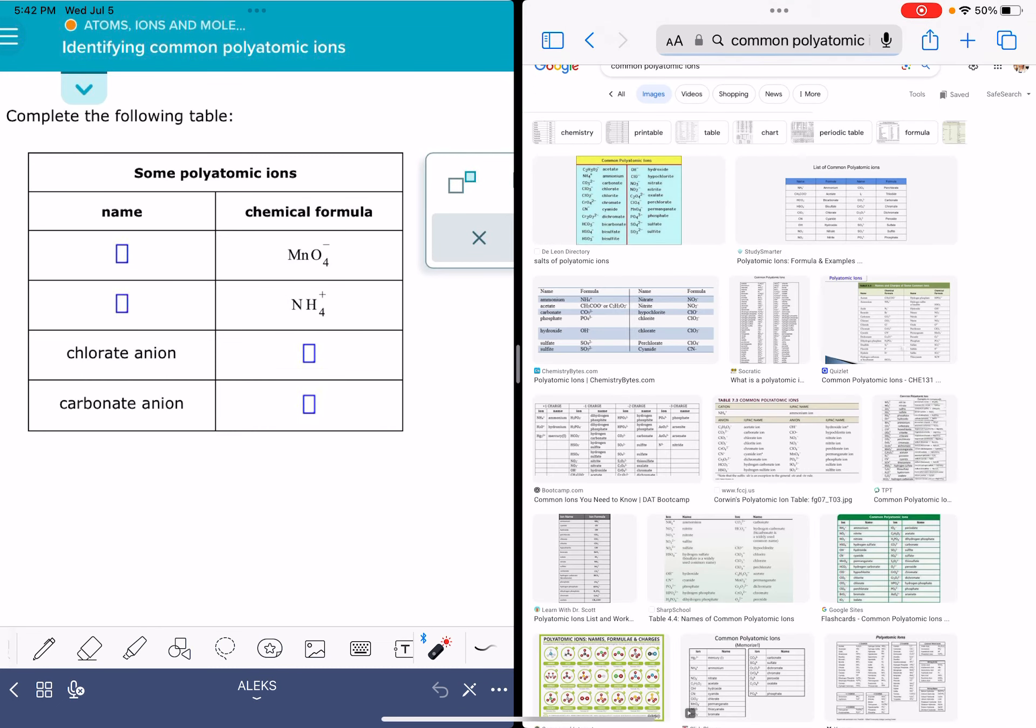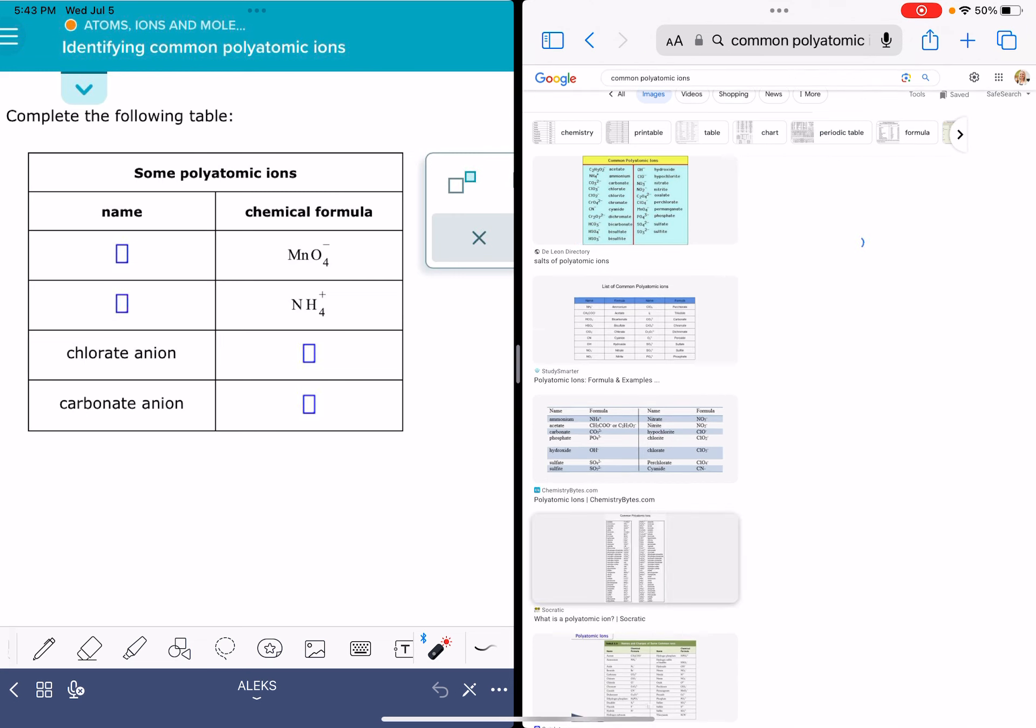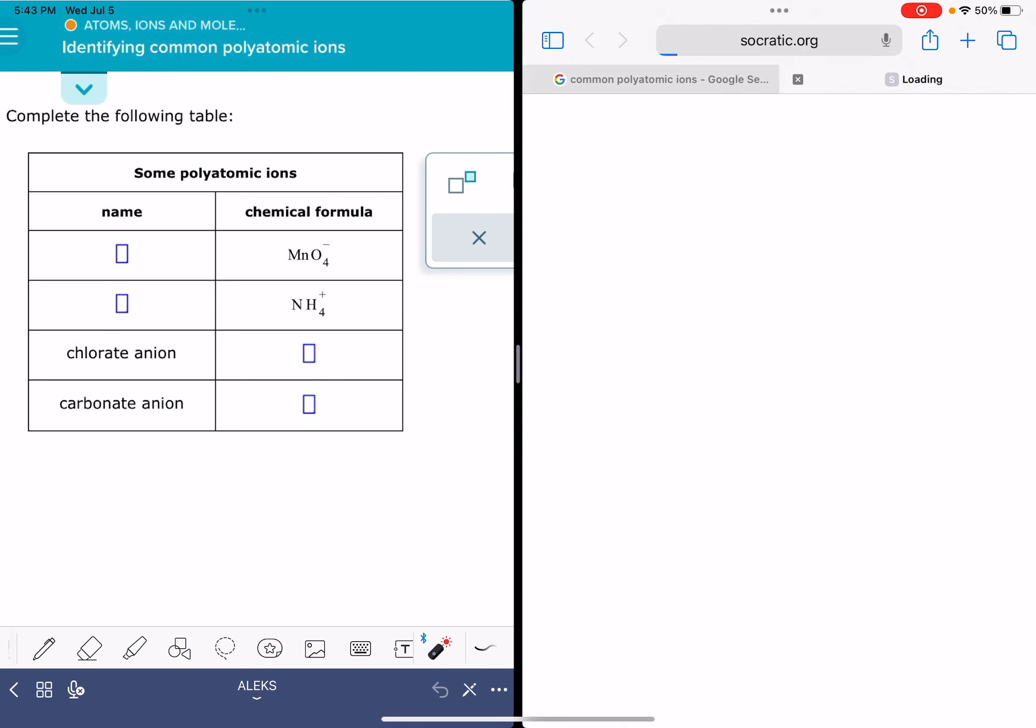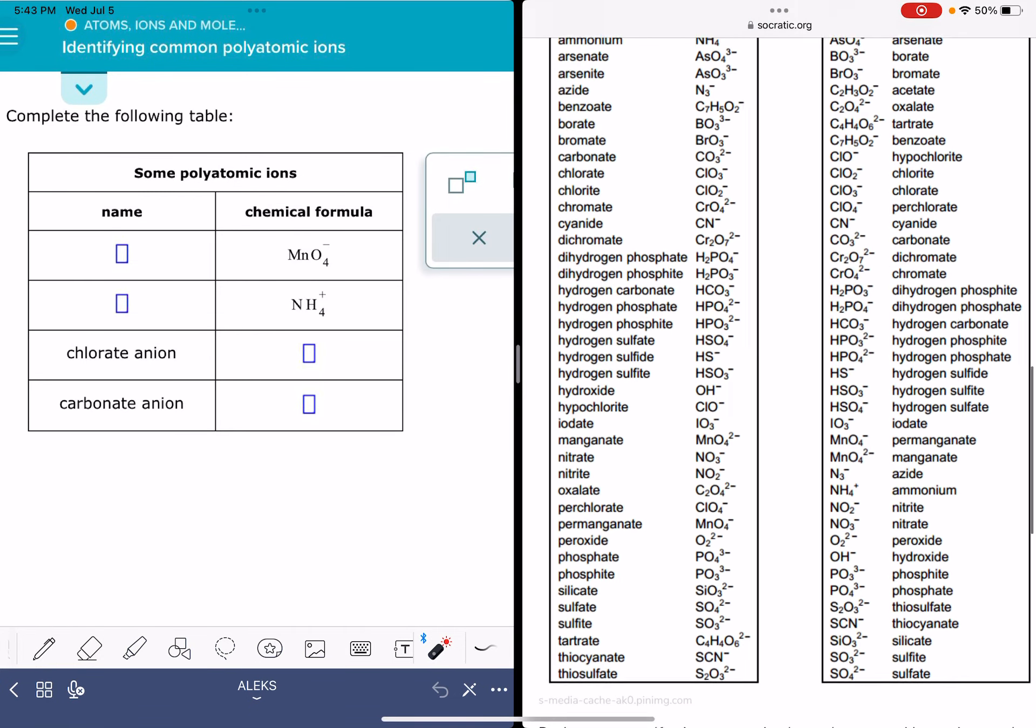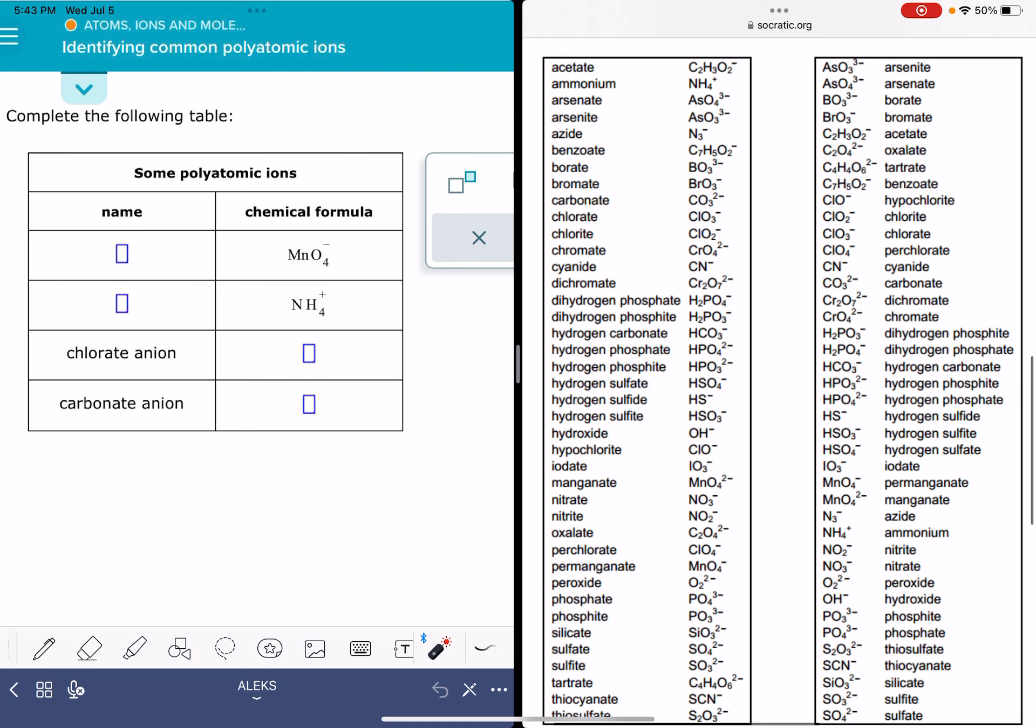I'm just going to look at some images of them. This is a table of polyatomic ions that I've used quite a bit. It's pretty complete. It's got a lot on it, a lot of information on it.